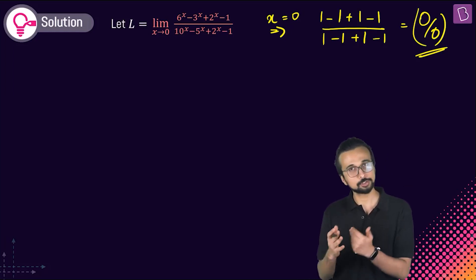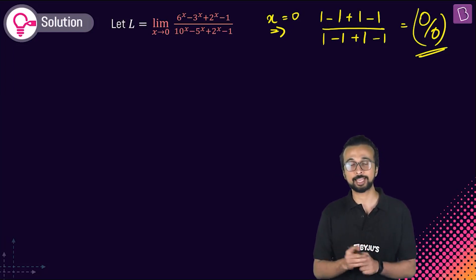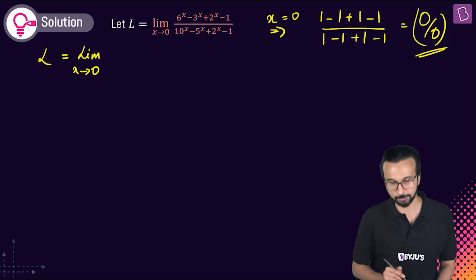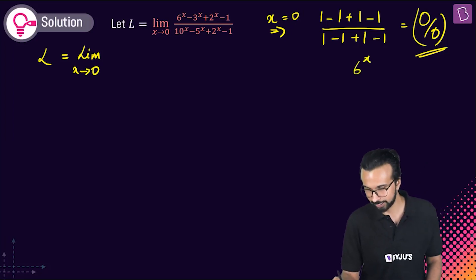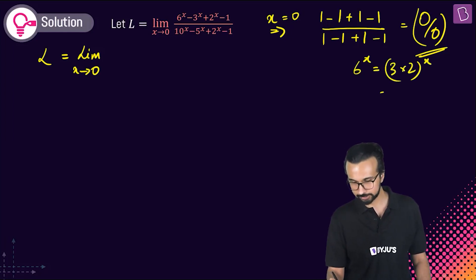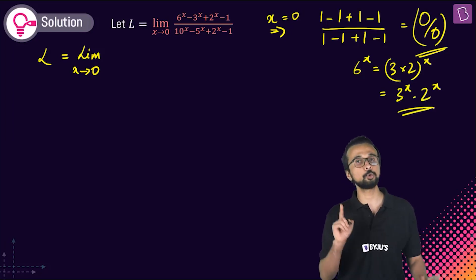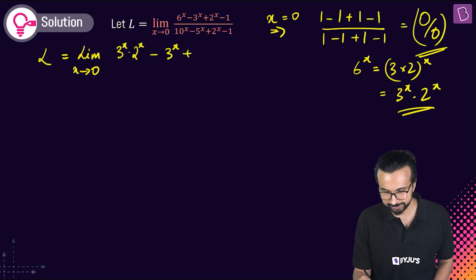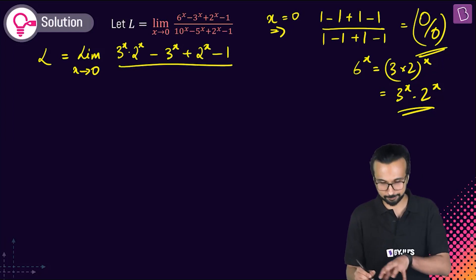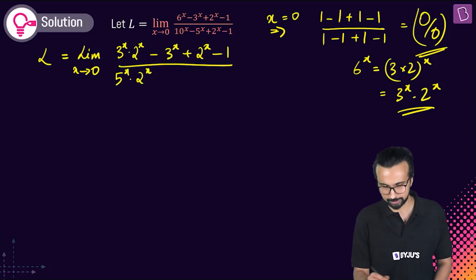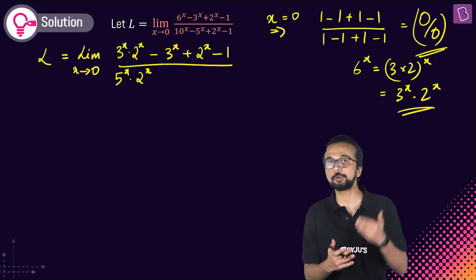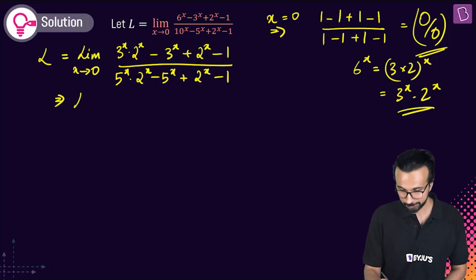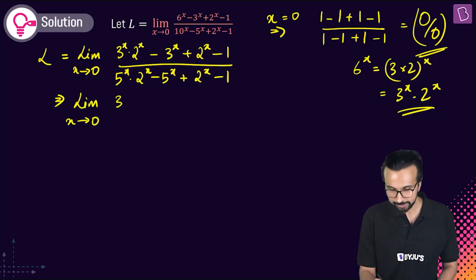We rewrite 6ˣ = (3×2)ˣ = 3ˣ·2ˣ. So the numerator becomes 3ˣ·2ˣ - 3ˣ + 2ˣ - 1. Similarly, 10ˣ = 5ˣ·2ˣ, so the denominator becomes 5ˣ·2ˣ - 5ˣ + 2ˣ - 1. Now we factor: numerator gives 3ˣ(2ˣ - 1) + (2ˣ - 1) = (2ˣ - 1)(3ˣ + 1).